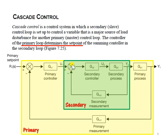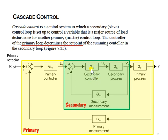We have a summing junction that produces the error by comparing the set value and the measured value or process variable (PV). This error is fed into the secondary controller, which determines the suitable output for the secondary process. A measurement monitors the process variable via this loop — named secondary measurement. The controller can be proportional, PI, or PID as learned earlier.